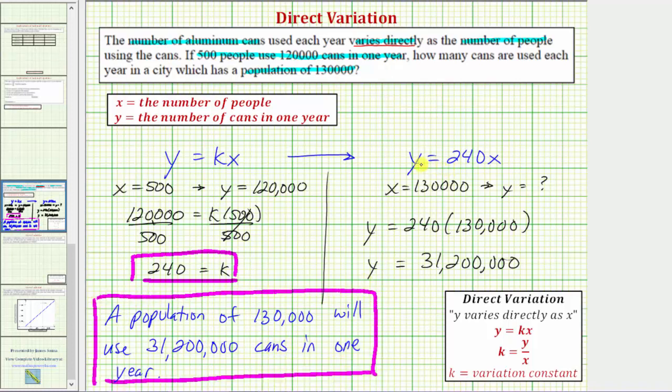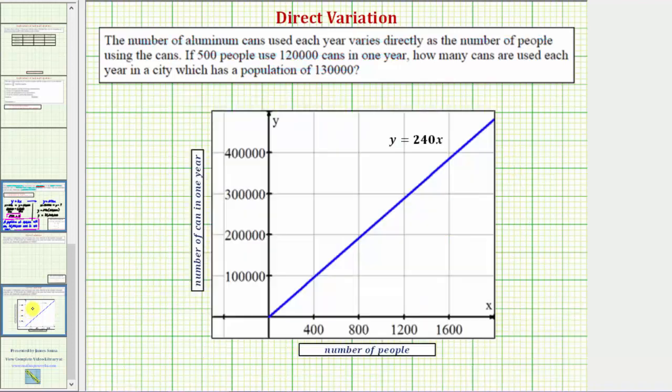Before we go though, let's look at the graph of y equals 240x on the coordinate plane. Notice how the vertical intercept or the y intercept is zero. 240 is the slope of the line. Remember the slope tells us the change in y divided by the change in x. So, as a fraction, 240 is 240 over one. So, the slope tells us 240 more cans are used each year each time the population increases by one.